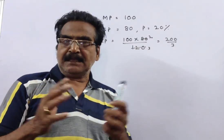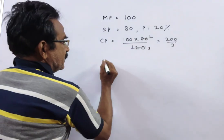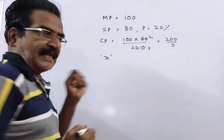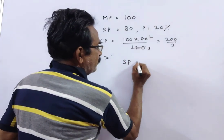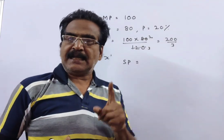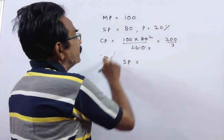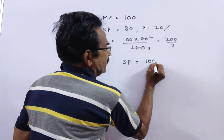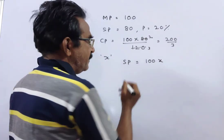Let us say on that particular day he sold X articles. The selling price of X articles — since he sold each article at the marked price of 100 rupees — the selling price of X articles is X × 100, which equals 100X.